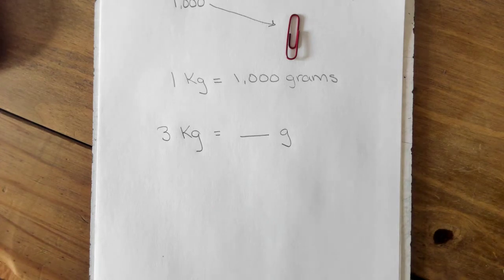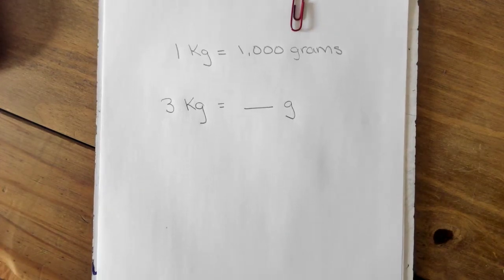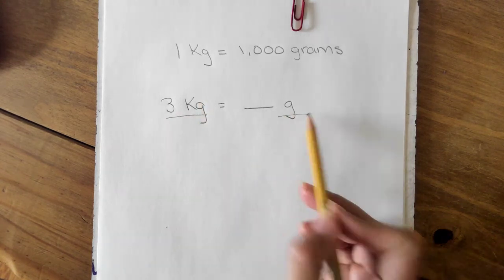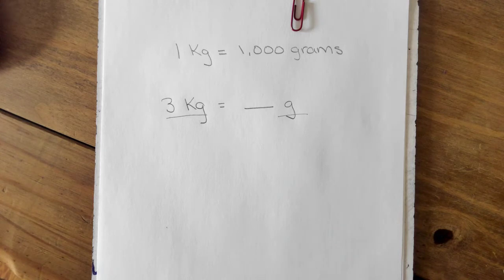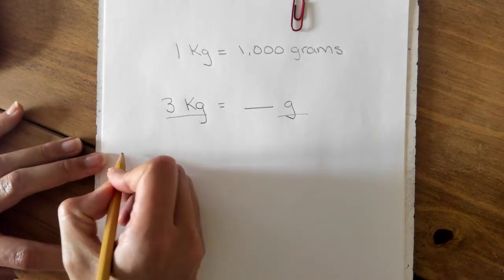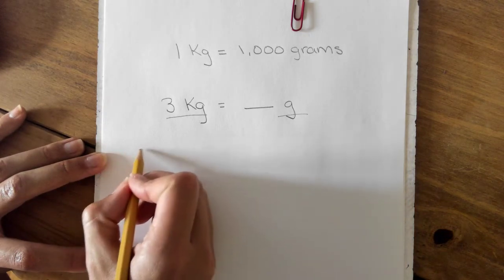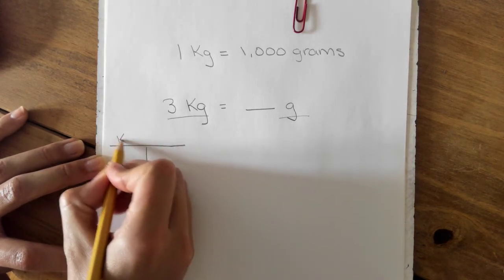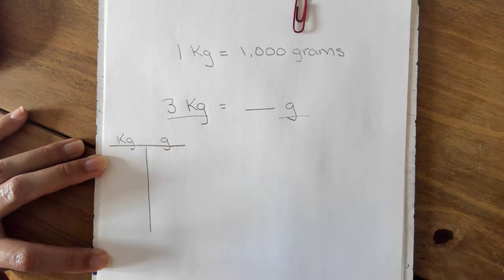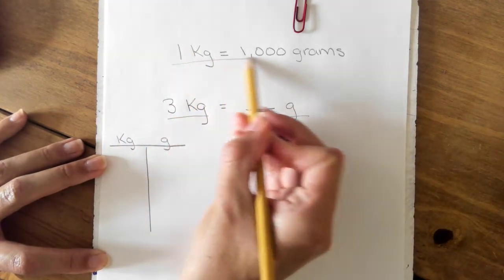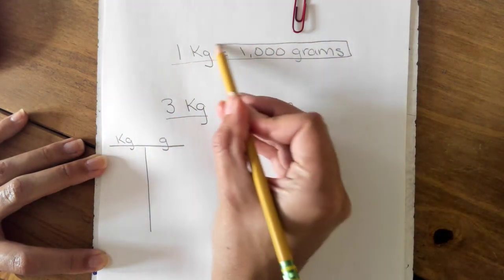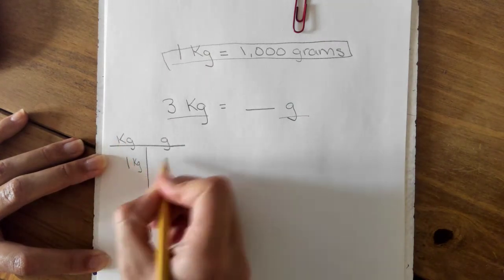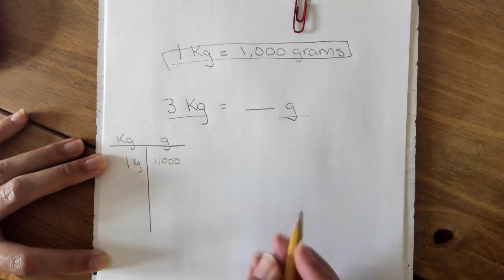We've learned a couple of different strategies that we can use to convert from a bigger unit of measurement to a smaller unit of measurement. The first one we learned was a conversion table. You could make your own conversion tables—this one is going to be kilograms, this one is grams. Starting with our key, I can fill in my conversion table: one kilogram equals one thousand grams.